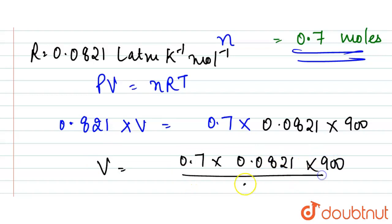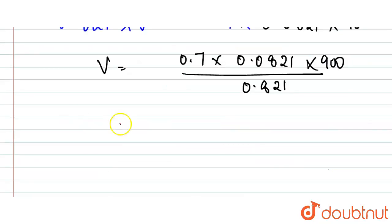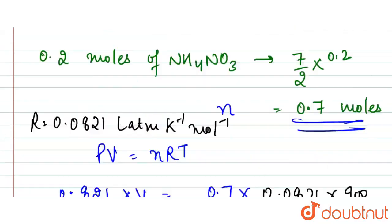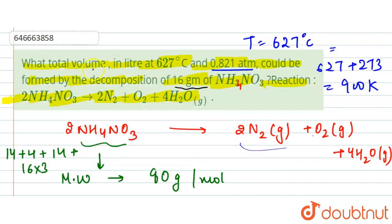So the volume is equal to 0.7 into 0.0821 into 900 upon 0.821. So our volume comes to be 63 liters, and that is our required answer. We have been asked the total volume, so answer is 63 liters. Thank you.